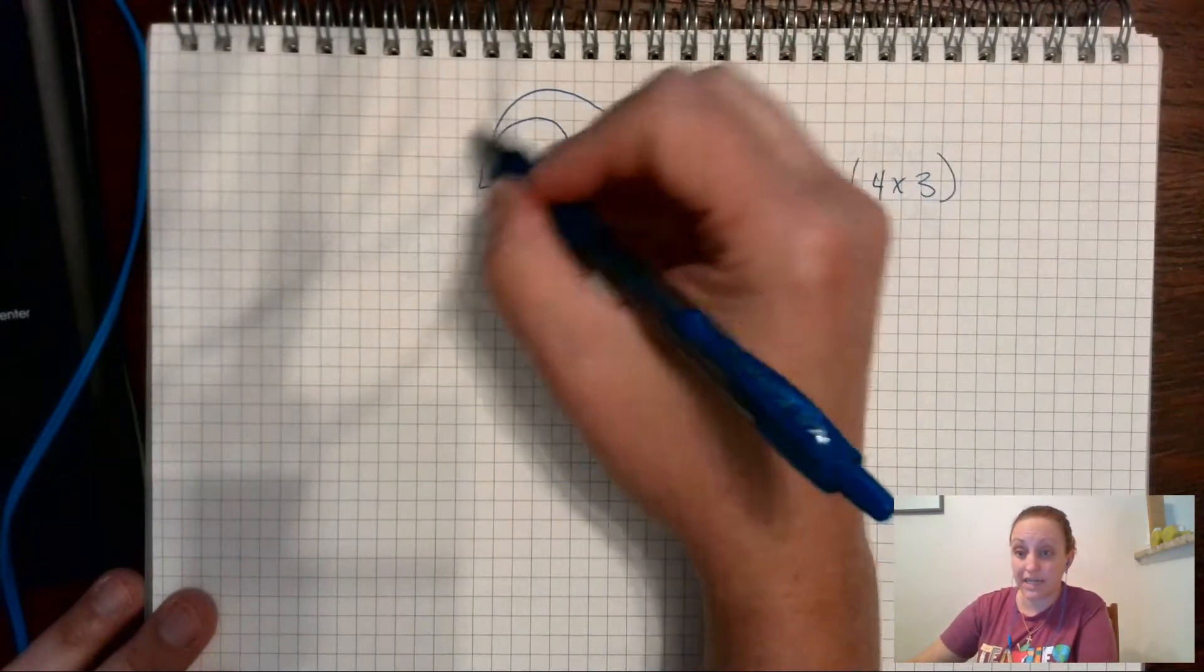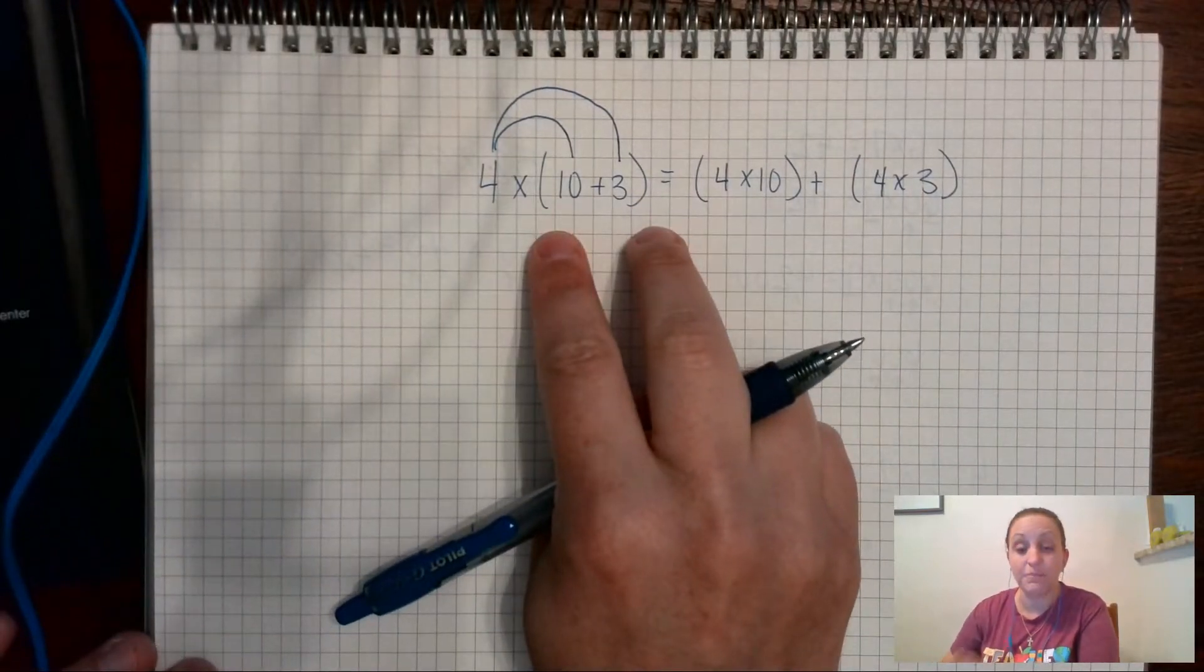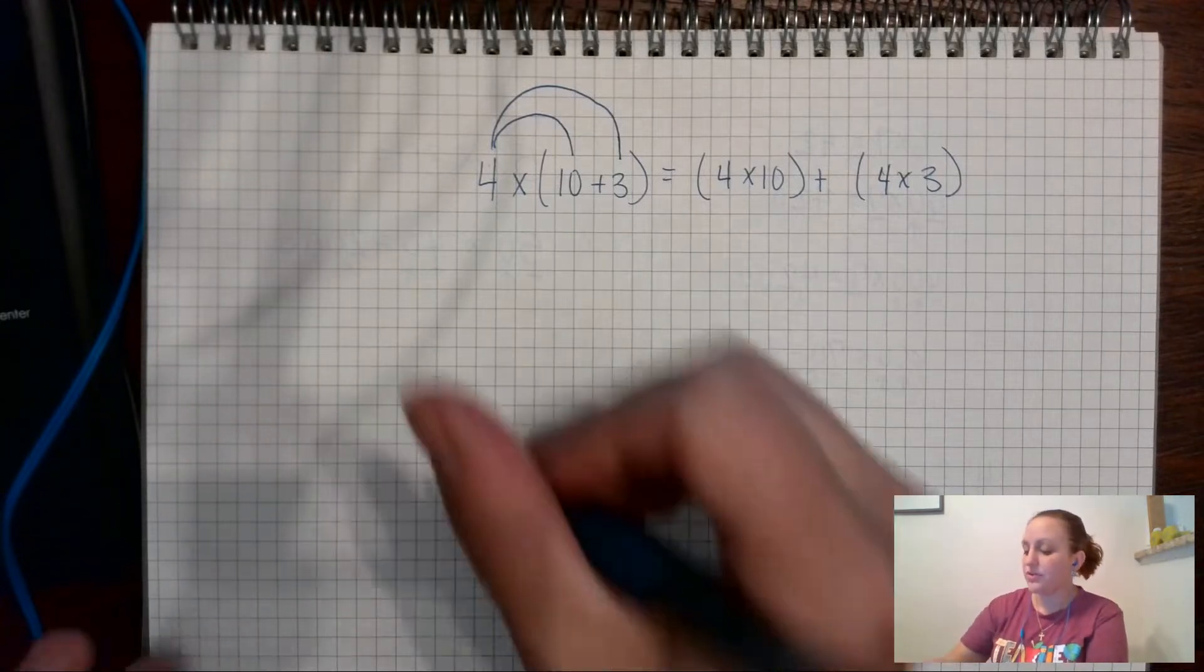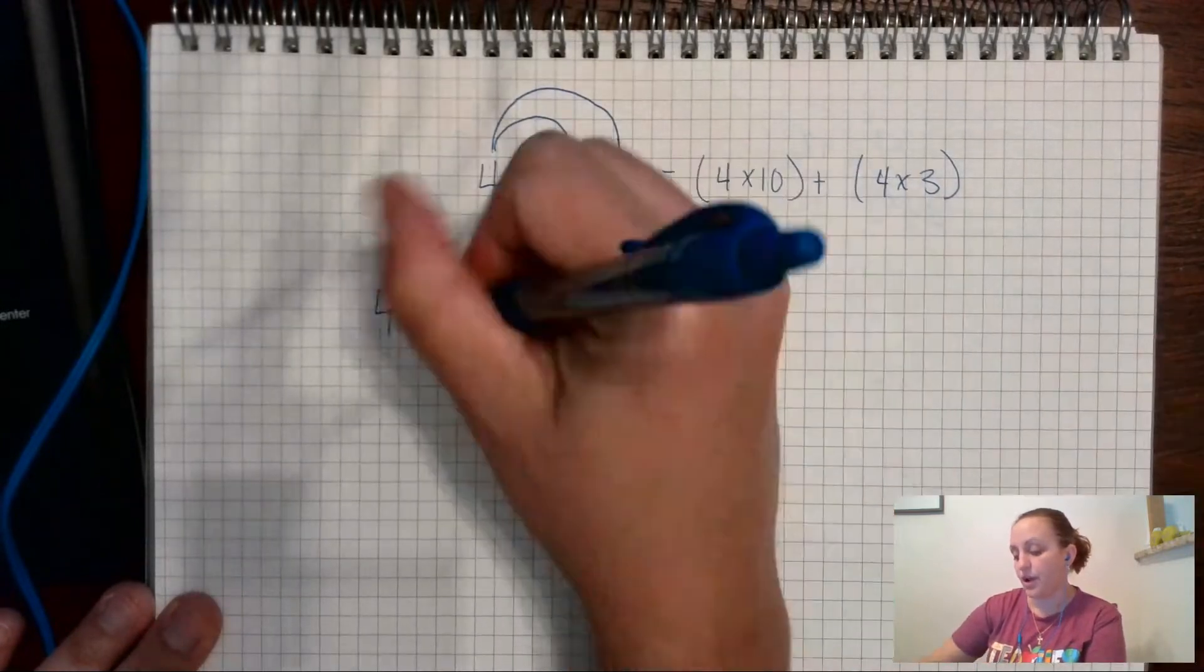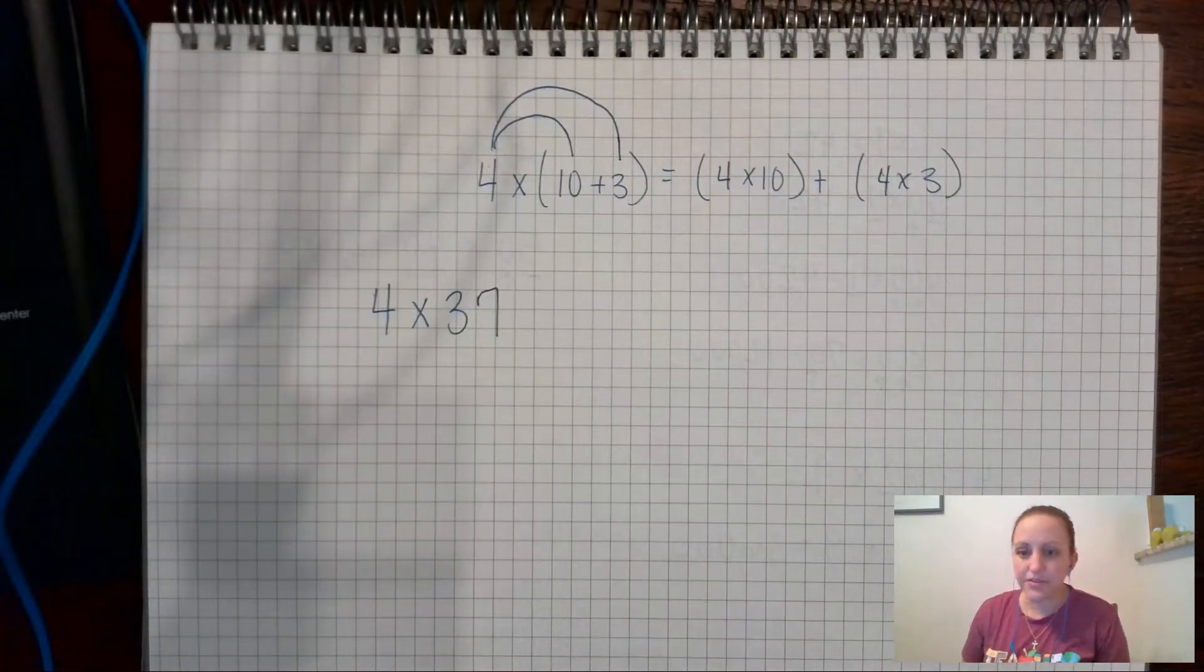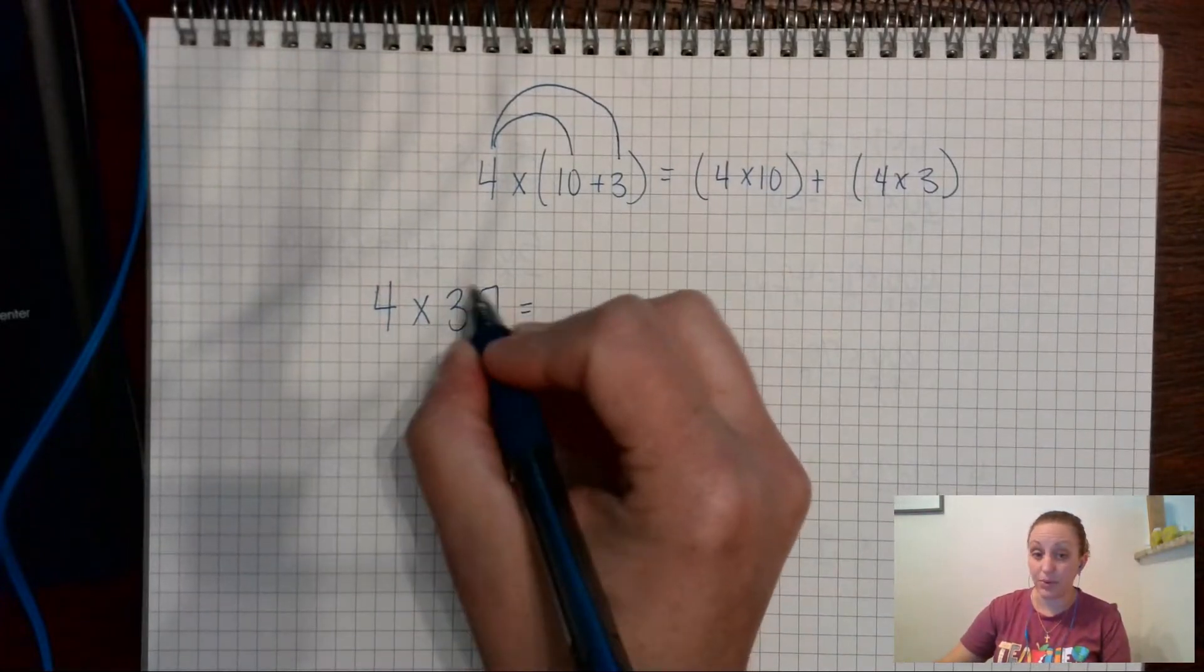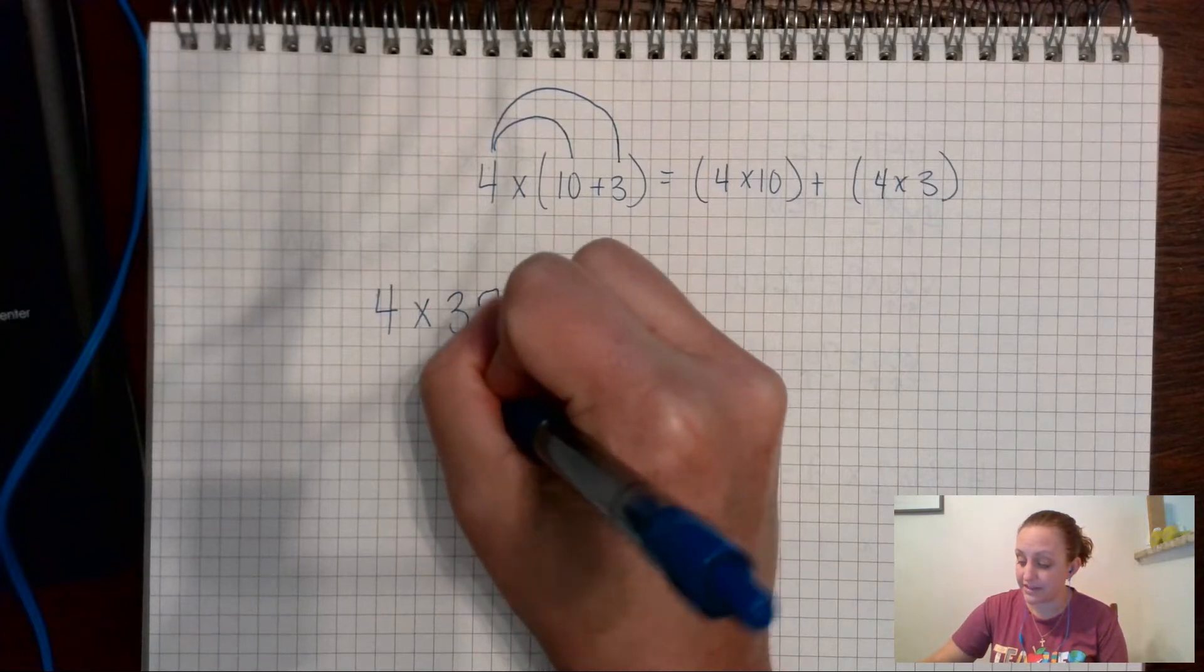Now let's look at something that's a little bit more of a bigger problem. If you had, let's say, 4 times 37, there's a couple of different ways that you could do this. The way that I would personally choose to do this is I would look and say, well, 37 is the same thing as 30 plus 7.